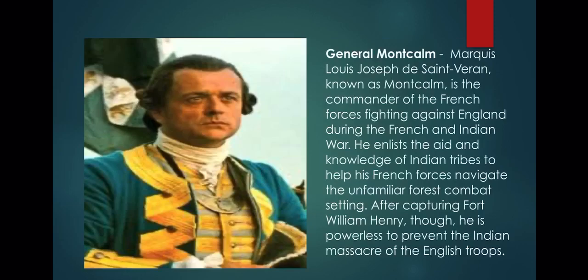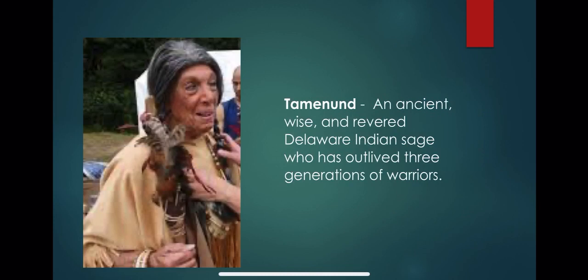General Montcalm — whose full name is Marquis Louis-Joseph de Saint-Véran, known as Montcalm — is the commander of the French forces fighting against England. During the French and Indian War, he enlists the aid and knowledge of Indian tribes to help his French forces navigate the unfamiliar forest setting. After capturing Fort William Henry, he is powerless to prevent the Indians' massacre of the English troops. Taminond is an ancient, wise, and revered Indian sage who has outlived three generations of warriors.